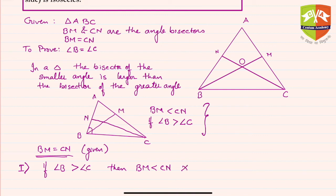Case two: if angle B is less than angle C, then what will happen? BM will be greater than CN.